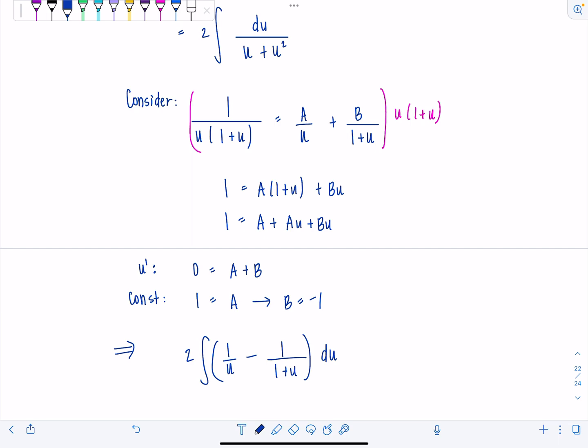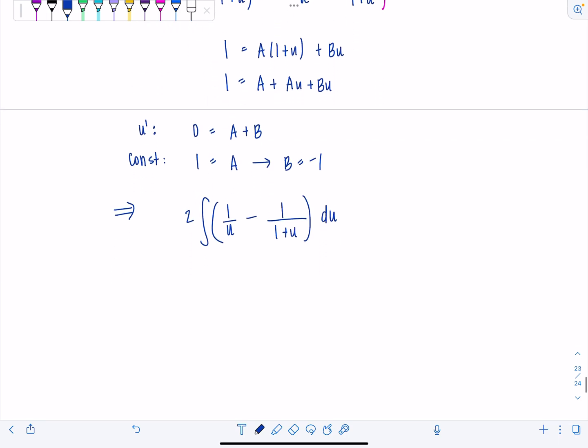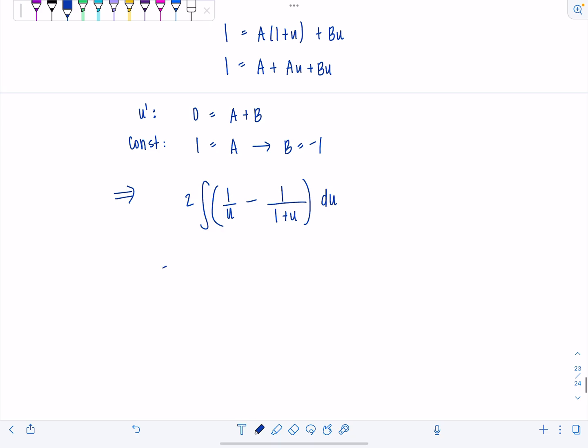And then both of these antiderivatives involve natural log. You should be able to just directly anti-differentiate from here. So 2 times natural log absolute value of u minus natural log absolute value of 1 plus u plus c.